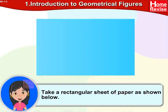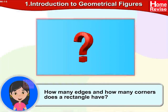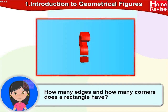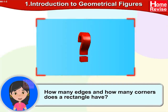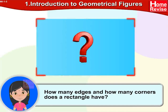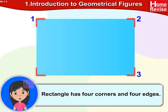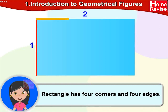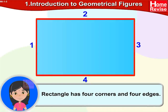Take a rectangular sheet of paper as shown below. How many edges and how many corners does a rectangle have? If you notice properly, a rectangle has four corners and four edges.